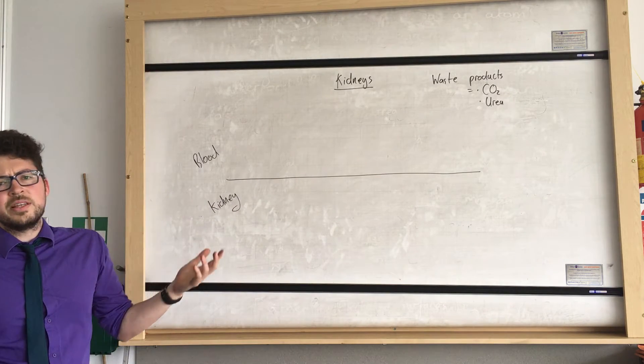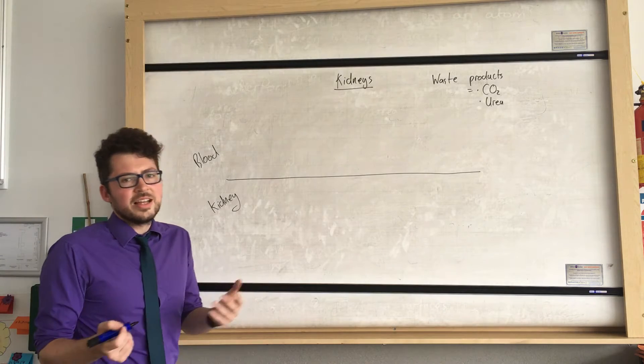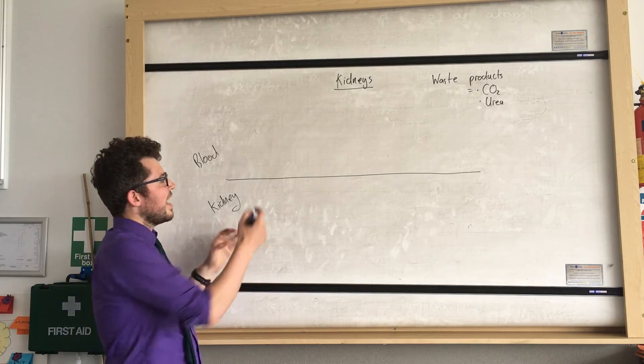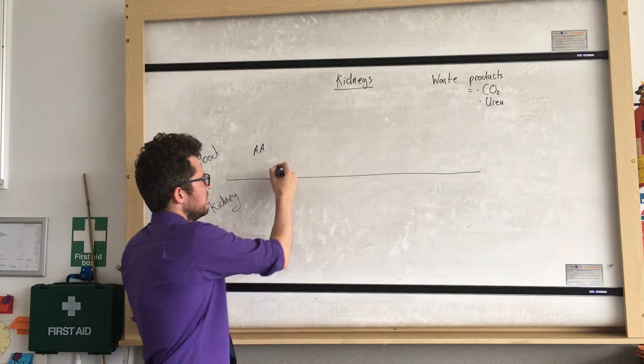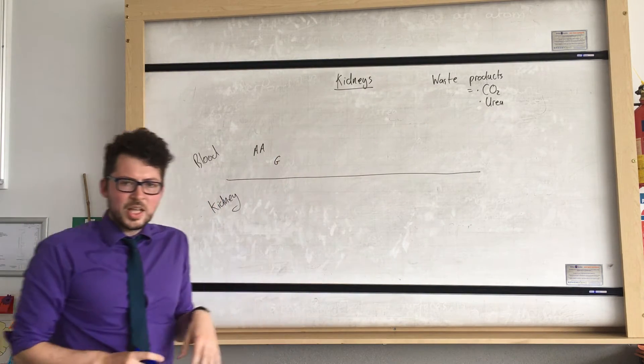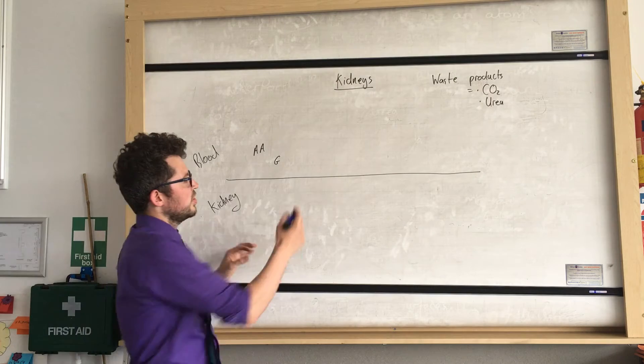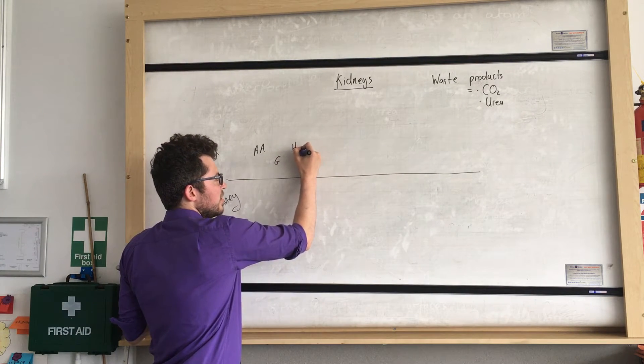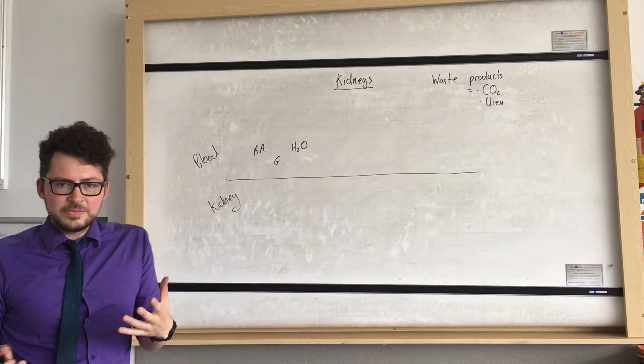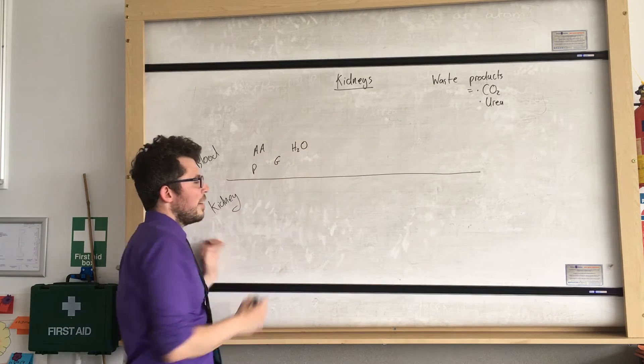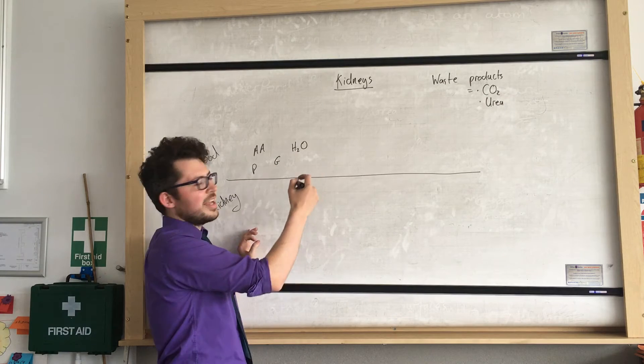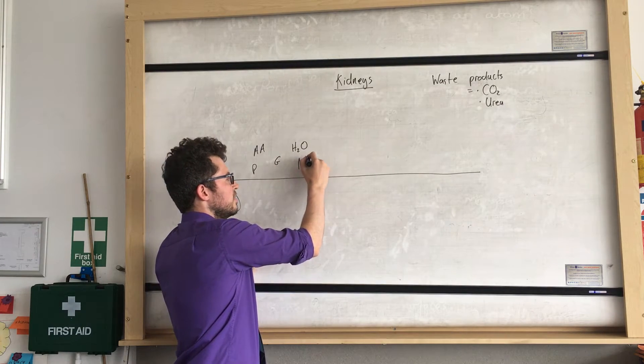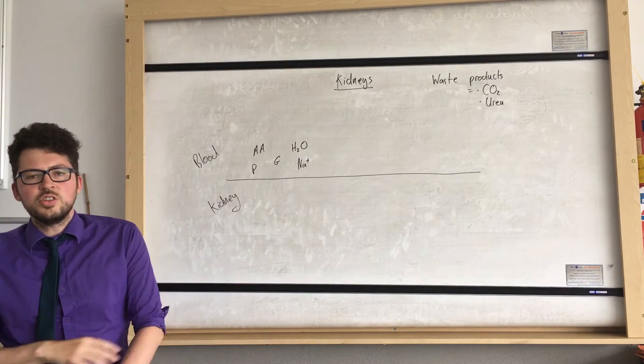So the materials that are in the blood we're looking at things like amino acids which are indicated as AA. We'll have glucose which we'll indicate as G. We'll have water which we'll indicate as H2O. We'll have proteins which I'll show as P. And we'll also have some ions and salts which I'll indicate as Na plus for our salts.